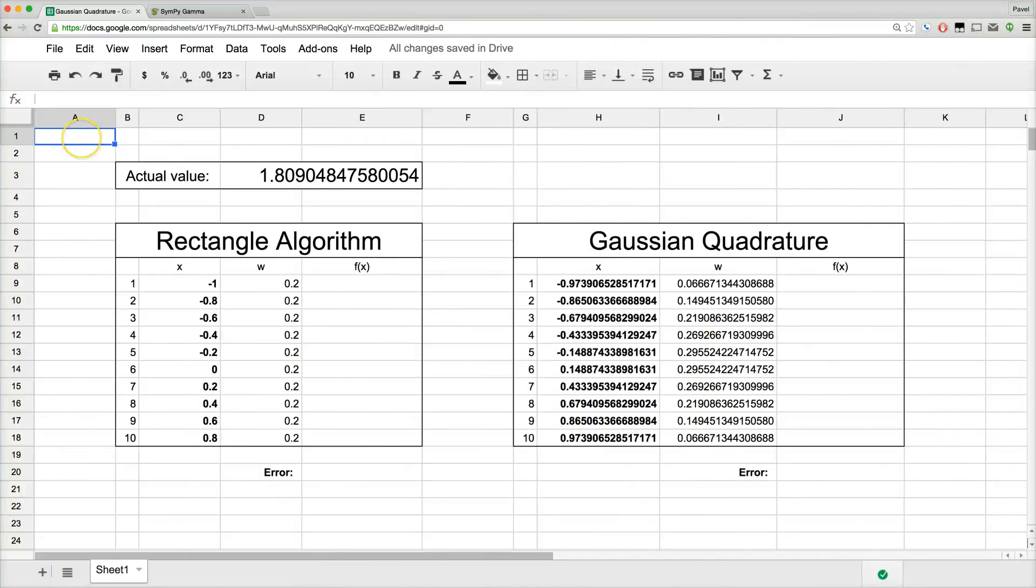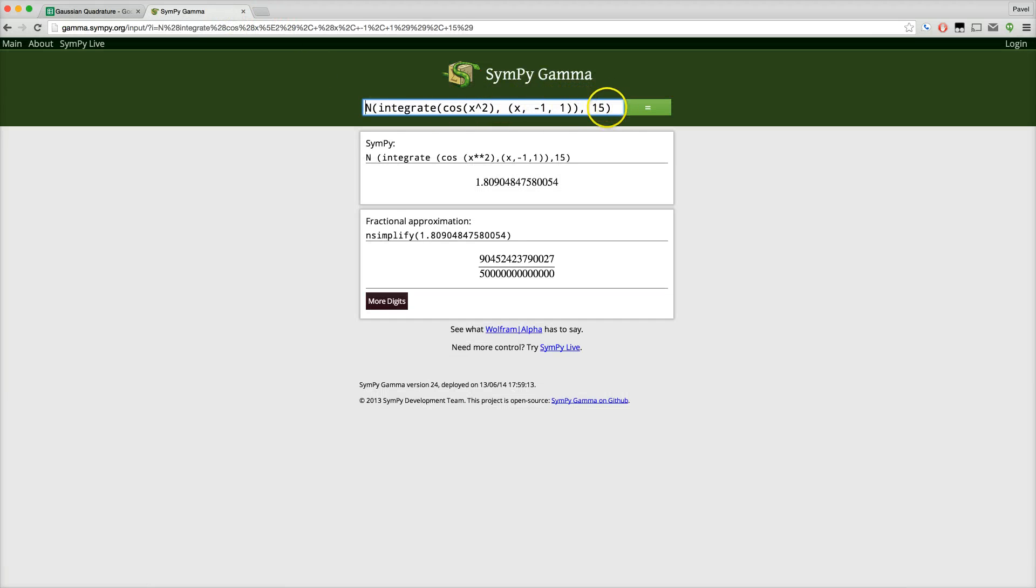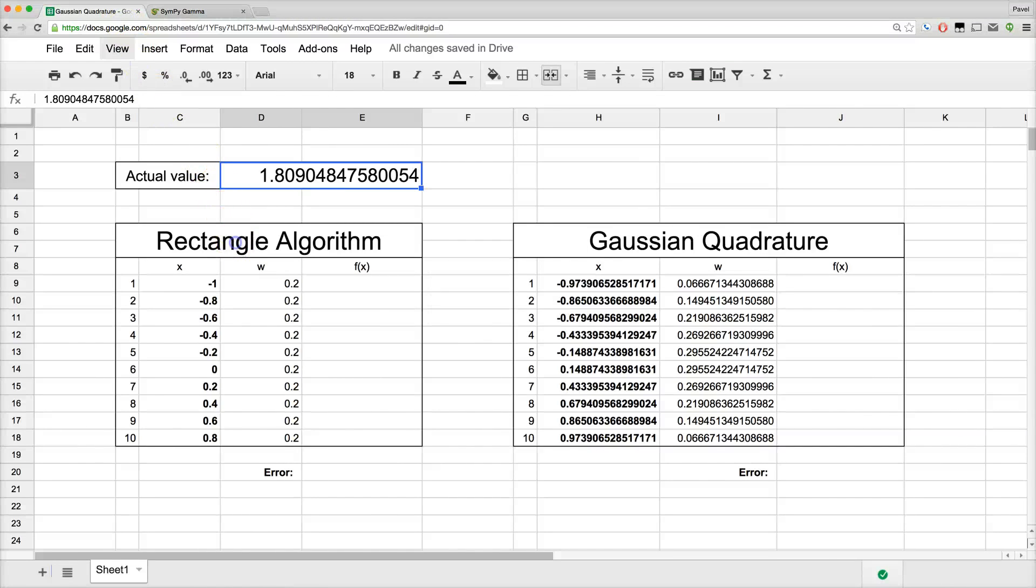Let's take a look. Now this is the true value of the area, which can be obtained by evaluating this command in Sympy Gamma, a very useful online tool for these kinds of calculations. So on the left here, we have an implementation of the rectangle algorithm. And on the right, Gaussian quadrature. These are the not-so-special x's at which our function will be evaluated in the rectangle algorithm. And then we'll multiply each one of those values by 0.2 and add the products together. And that will be our rectangle algorithm estimate for the area.